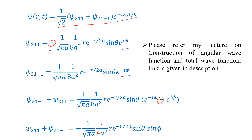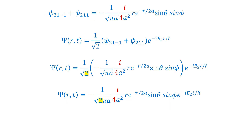Adding the two terms: the factor of 2 cancels with the 8, giving 4 in the denominator. Taking out the factor i, the result is sine φ. So the sum ψ₂₁₋₁ + ψ₂₁₁ equals minus 1 over square root of π times a, times i over 4a², times r e^(−r/2a), times sin(θ) sin(φ).